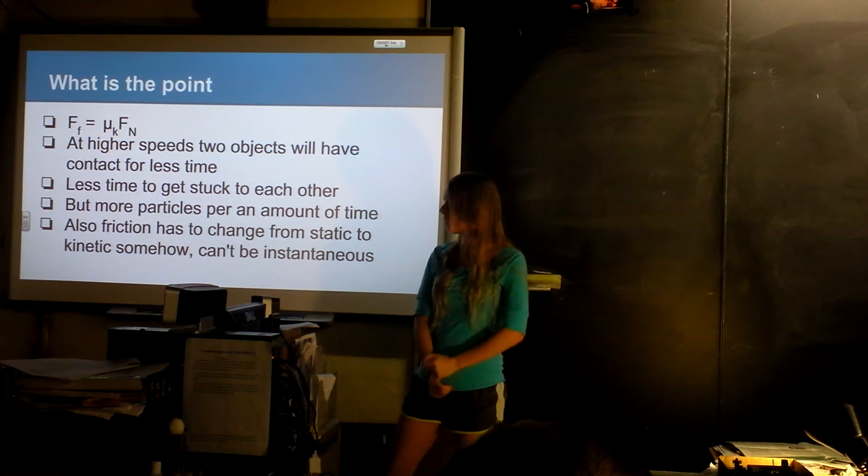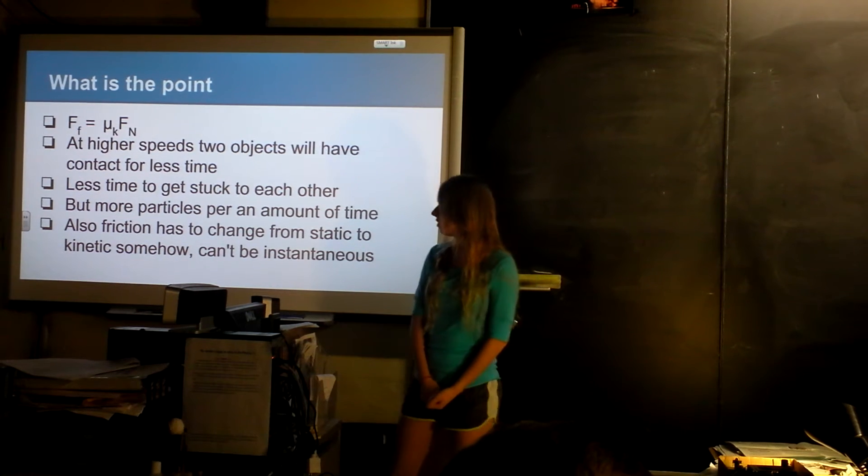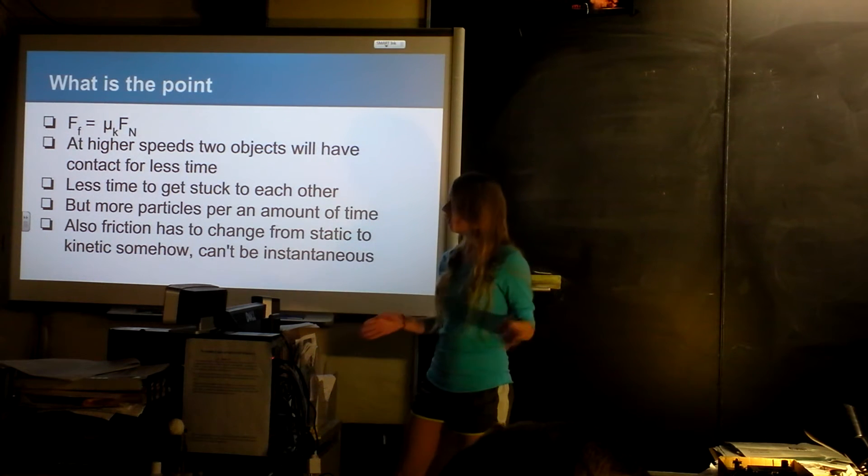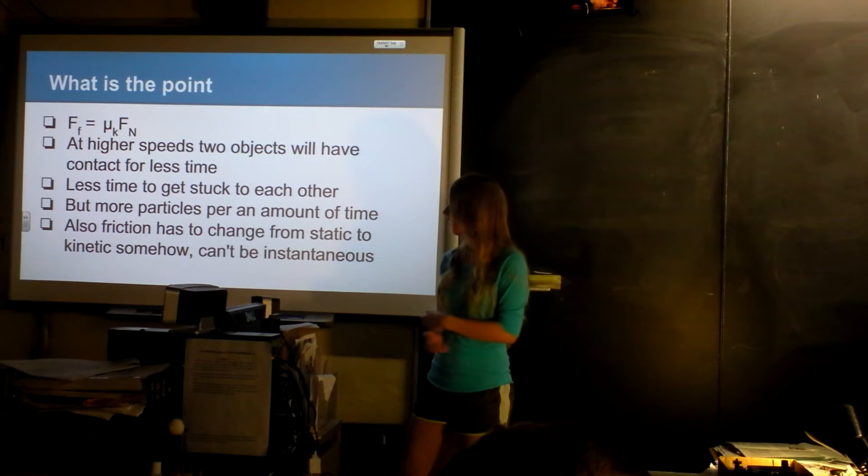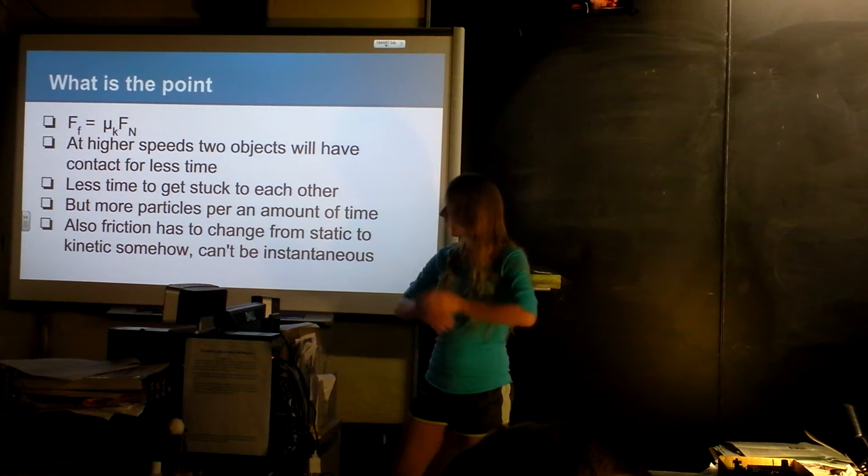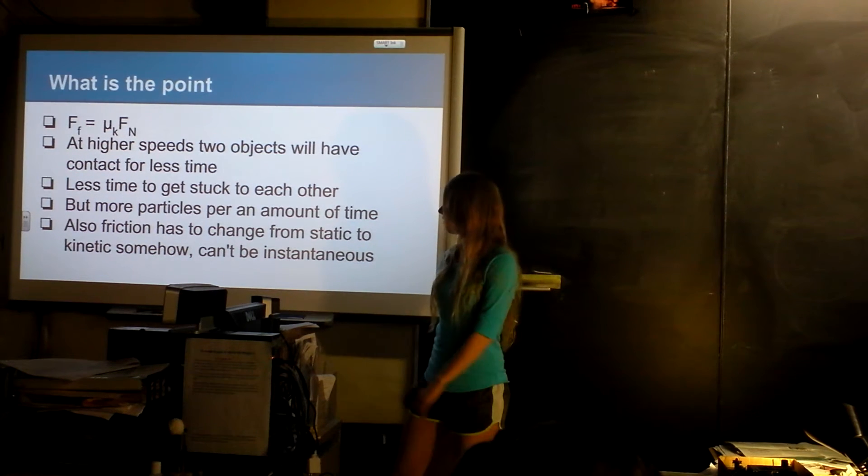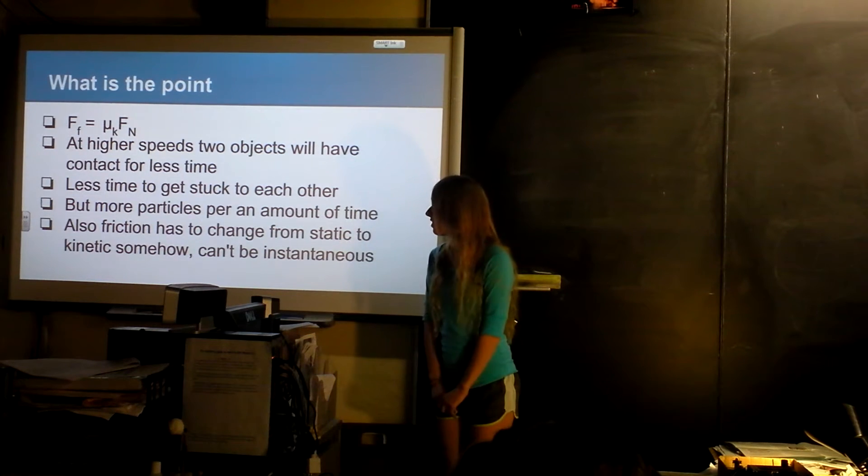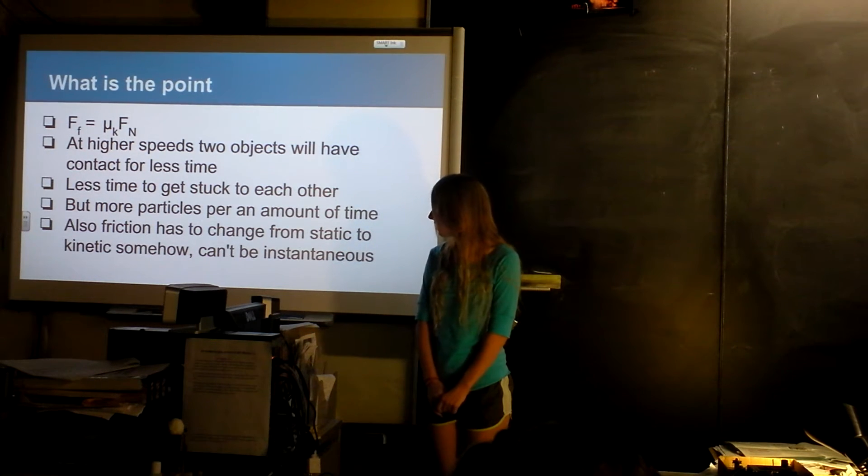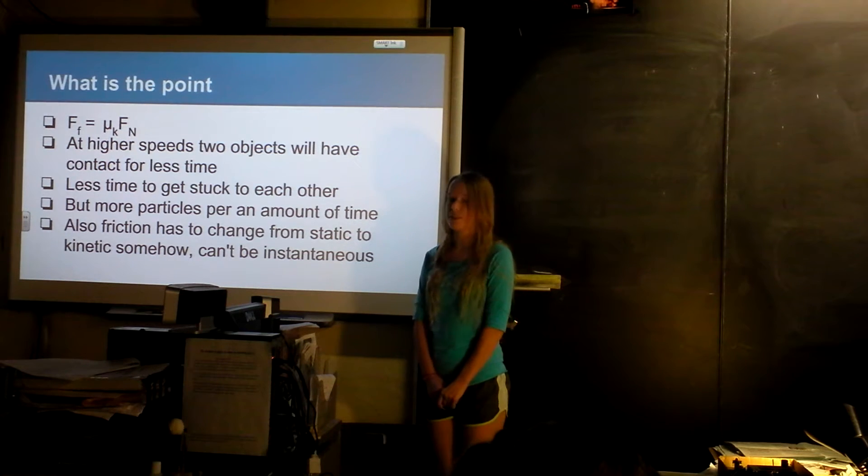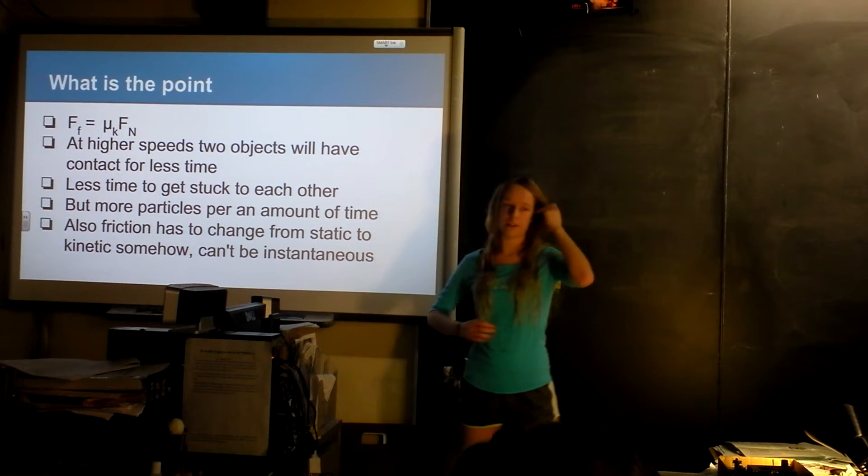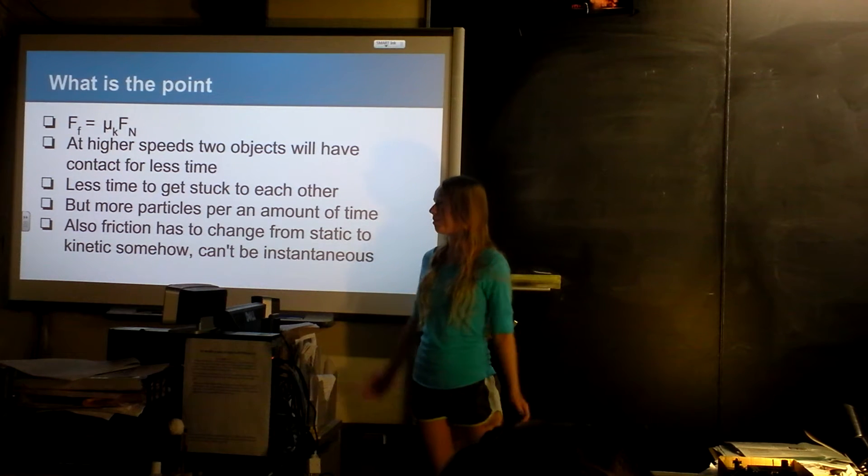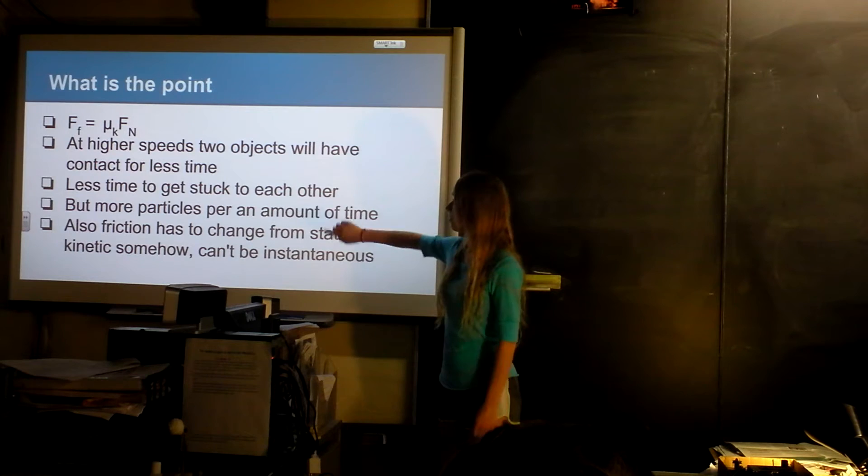But then somebody else argued with me that over any set time period, say one second, the object would be touching more particles. So I don't really know how it changes or if it's even affected by velocity. And also, you have one equation for static friction and one equation for kinetic friction and it's supposed to just jump down instantaneously, which is obviously not possible. So I wanted to see what was going on with that.